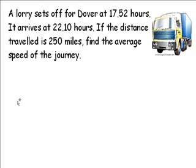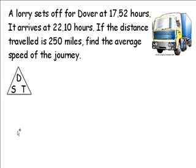We are going to use the formula for speed in this calculation, and that formula can be taken from the triangle containing distance, speed and time. If we cover up S with our finger, it leaves D over T, and that tells us that the formula for speed is distance divided by time.